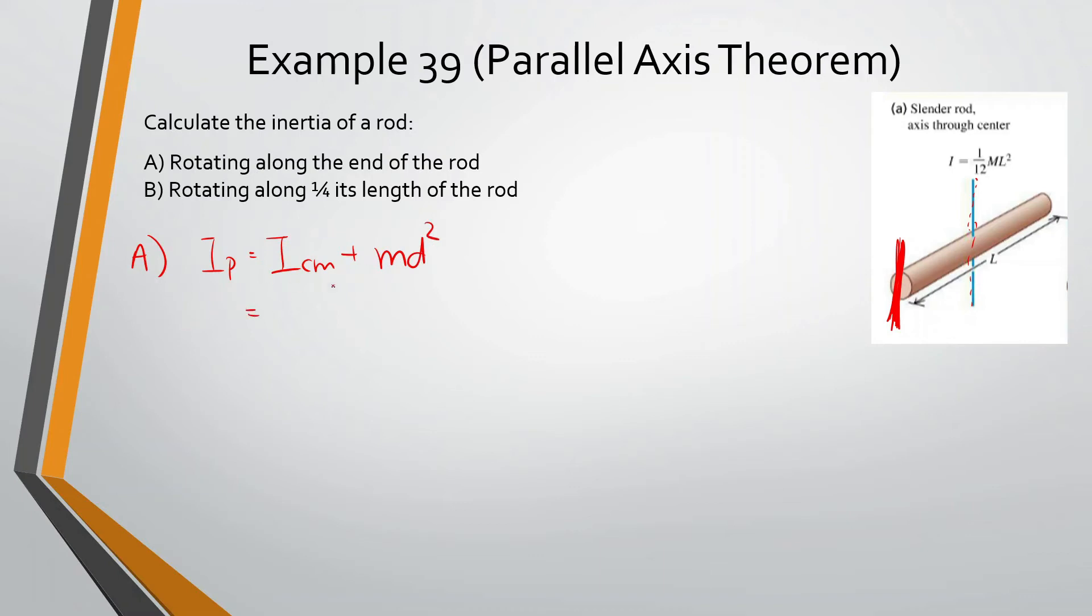All right, so ICM, this is going to be equal to one twelfth ml squared plus m. And now we have to figure, so this is the center of mass here, we're moving it this much distance, which is going to be one half l. So now this is going to change to be one half l squared. This simplifies to be one twelfth ml squared plus one fourth ml squared.